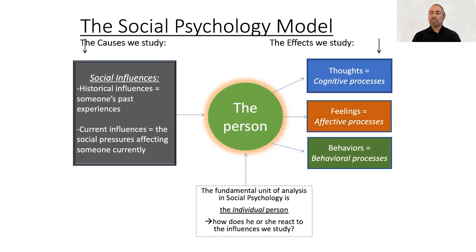The bottom box relates to the behaviors or actions — the motor responses that you might show in response to someone — and we call these the behavioral processes. Most commonly we look at these behavioral processes in terms of approach versus avoidance: are you attracted to someone, do you want to be around them, or are you trying to avoid them?